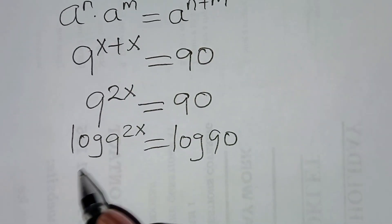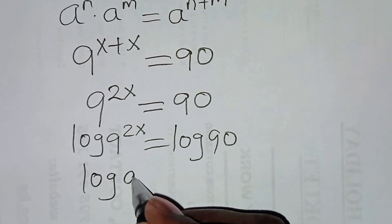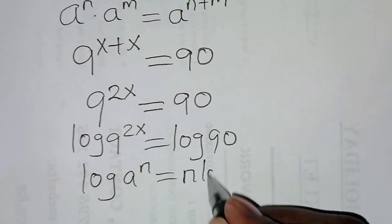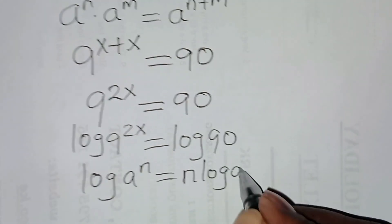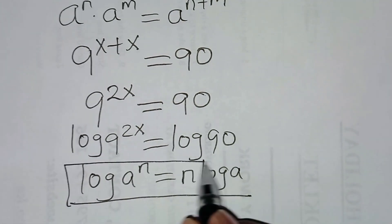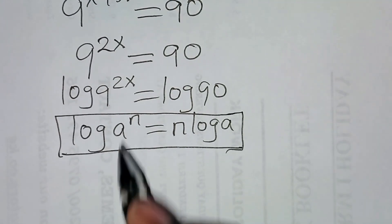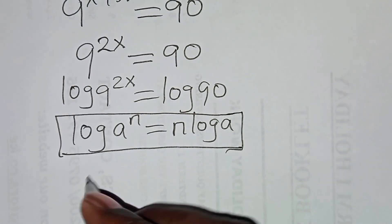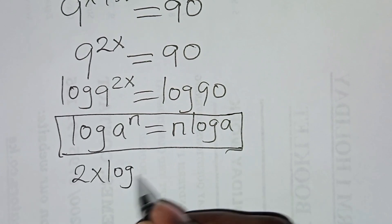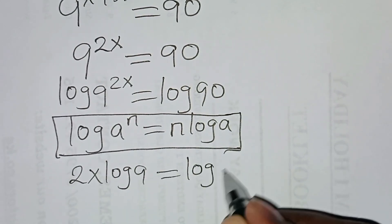So we find that log 9 to the power 2x is in the form of log a to the power n, which we can express as n times log a. Now applying this logarithm power property, log 9 to the power 2x becomes 2x times log 9, and this is equal to log 90.